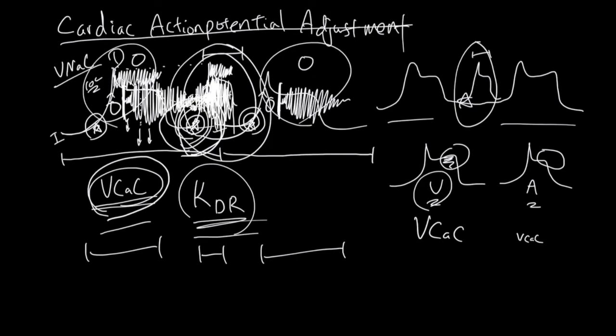And for the ventricular one, the delayed rectifiers come in a little bit later than for the atrial one. So this, more VCAC and then the later activation is like this one and this one.